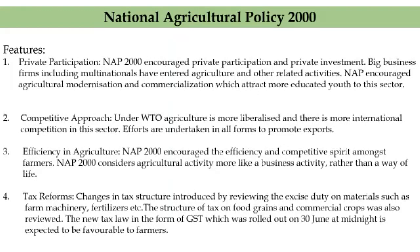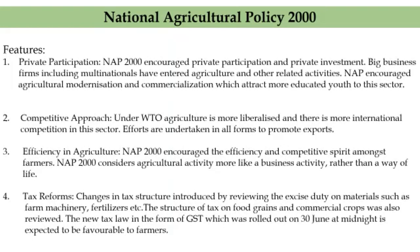The fourth feature is tax reforms. Changes in tax structure or level would be introduced by revising the excise duty on materials such as farm machinery and implements, fertilizers, or any other inputs and activities. The structure of tax on food grains and commercial crops would also be reviewed. Tax concessions would be better than unwarranted subsidies, as widespread subsidies not only impose a heavy financial burden on taxpayers but also encourage a dependency psychology among farmers. The new tax law in the form of GST, which was rolled out on 30 June at midnight, is expected to be favorable to farmers.